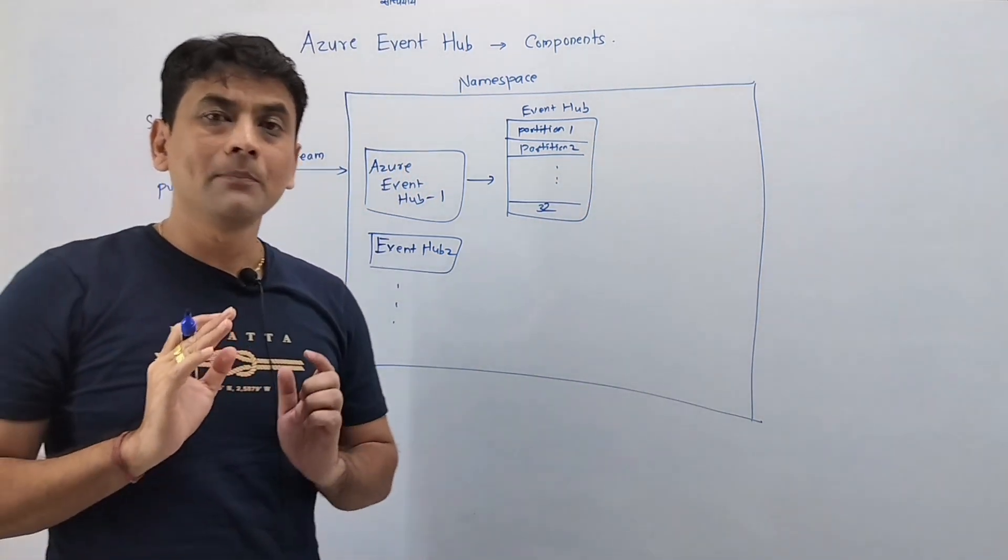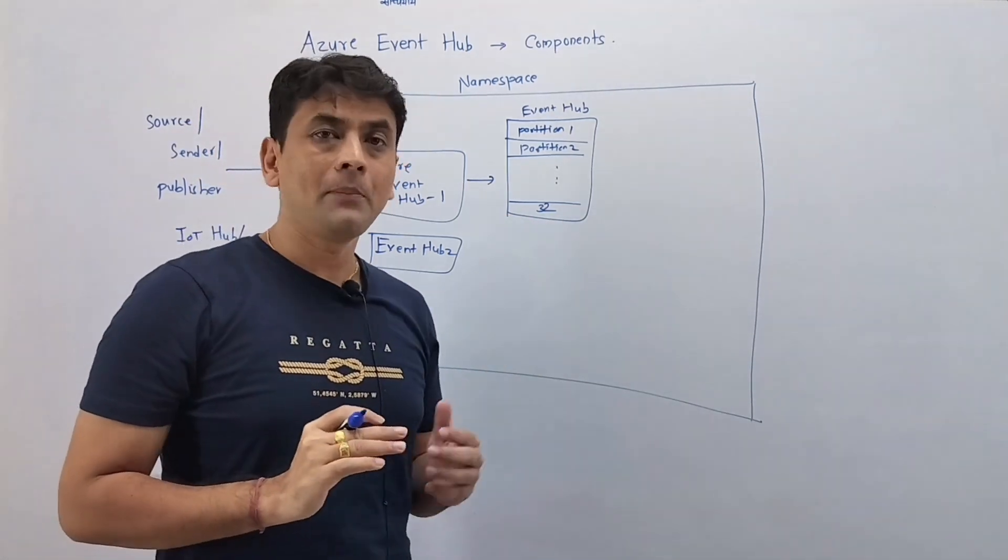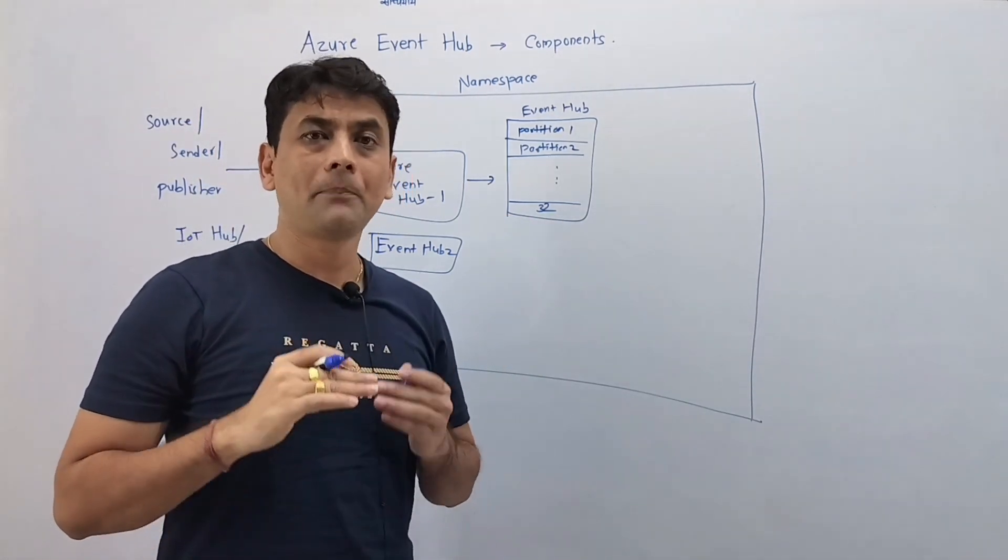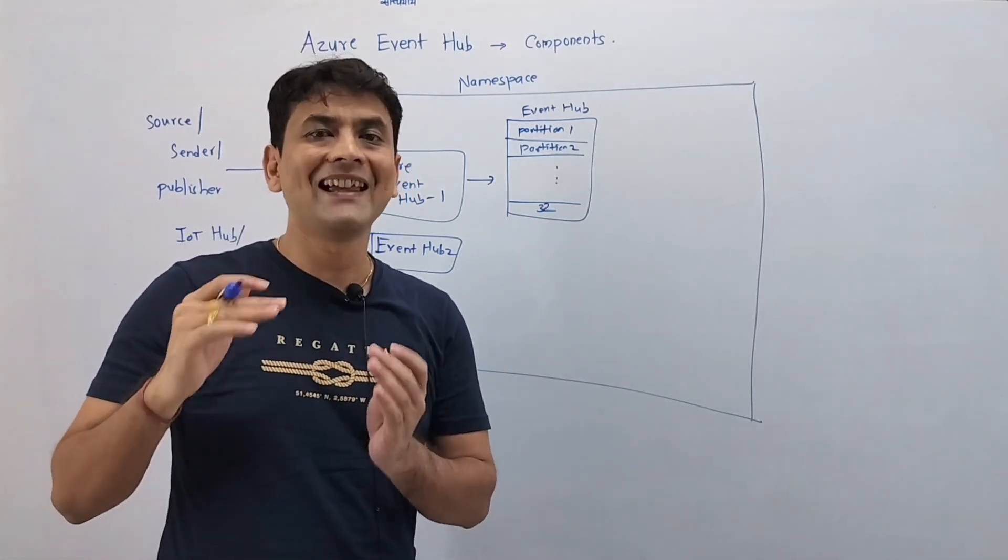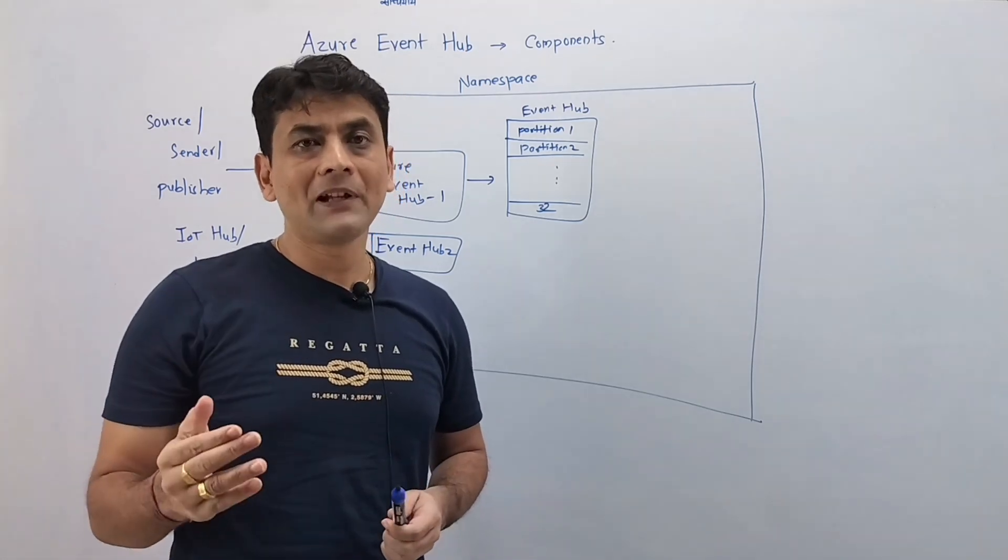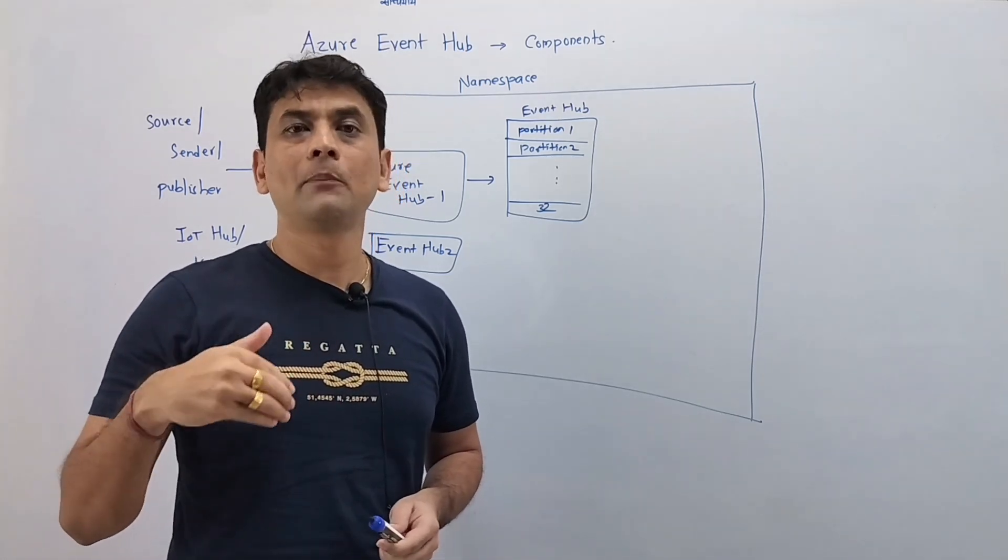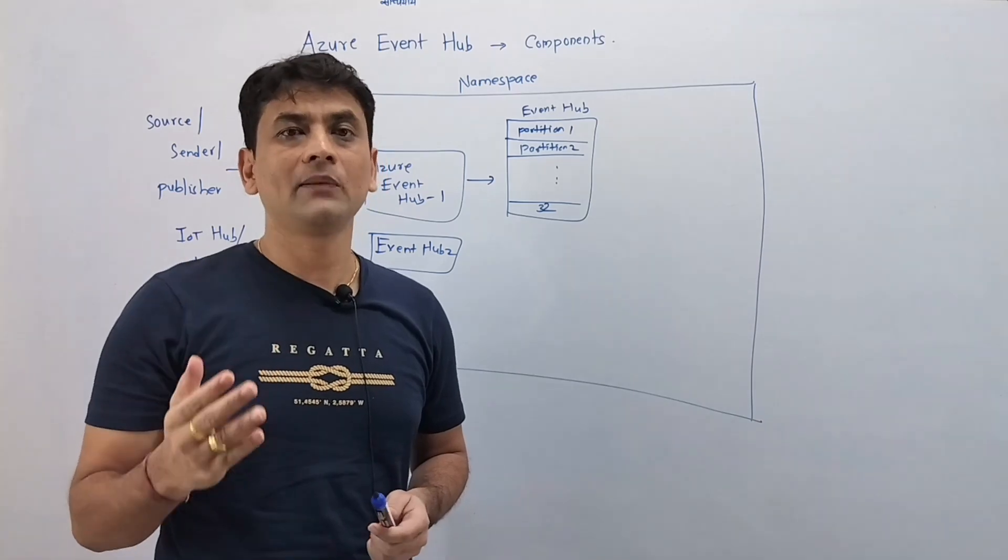Now, in simple words, consider Event Hub as highway and partitions as multiple lanes within that highway. So more the number of lanes, that means more number of vehicles can pass, that means better the performance.